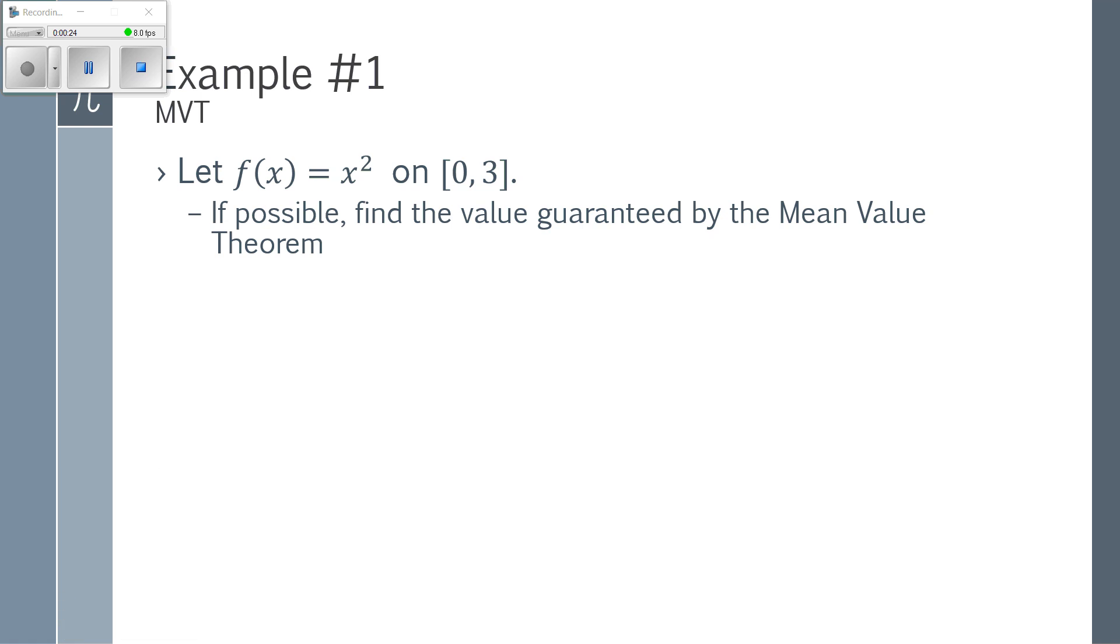Well, x squared is most definitely continuous on 0 to 3. So f of x is continuous on the closed interval 0 to 3. And the derivative of f of x is 2x, which does exist over that. So f of x is also differentiable on the open interval 0 to 3.